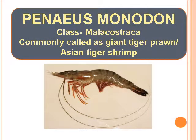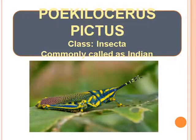Penaeus Monodon — Class Malacostraca, commonly called as Giant Tiger Prawn or Asian Tiger Shrimp. Poecilocerus Pictus — Class Insecta, commonly called as Indian Grasshopper.